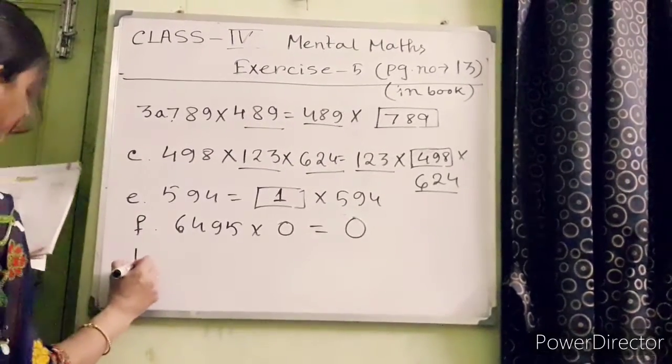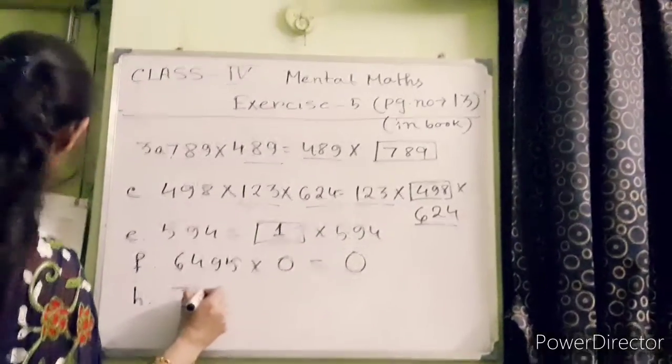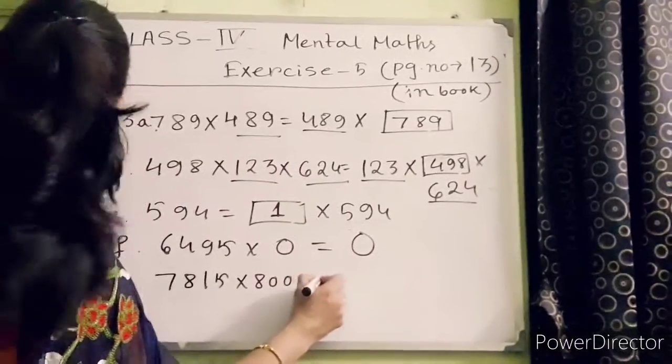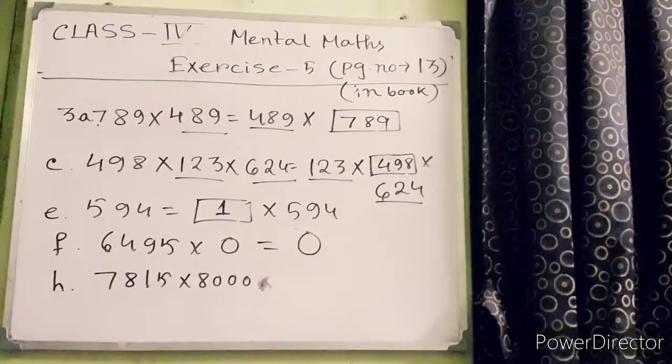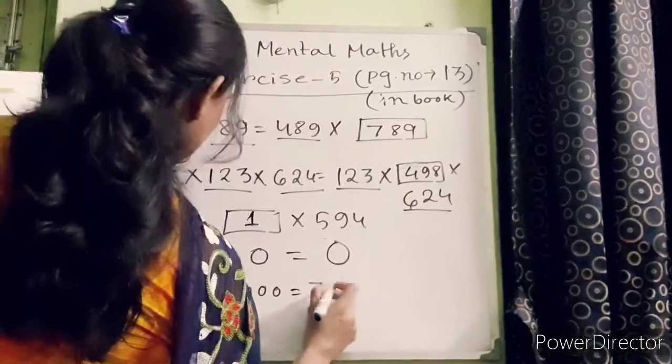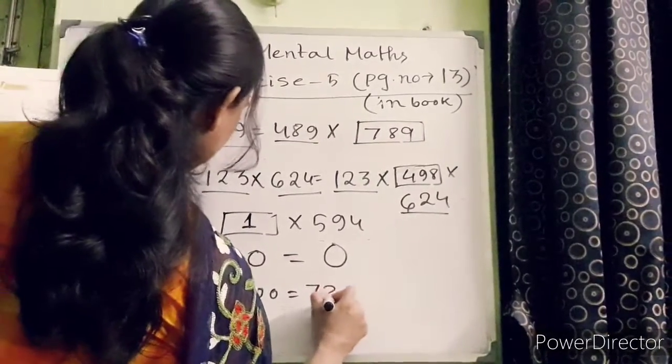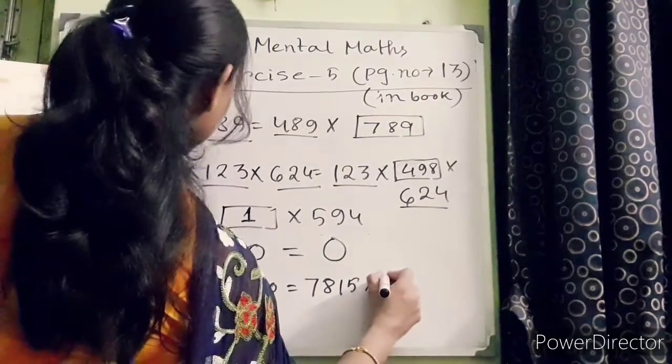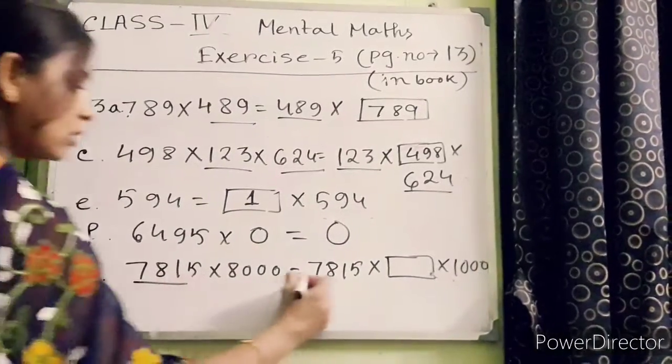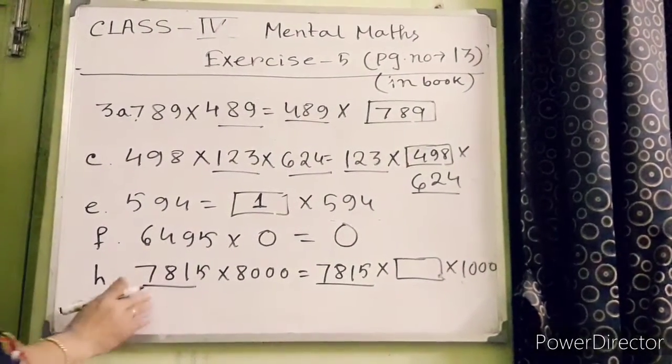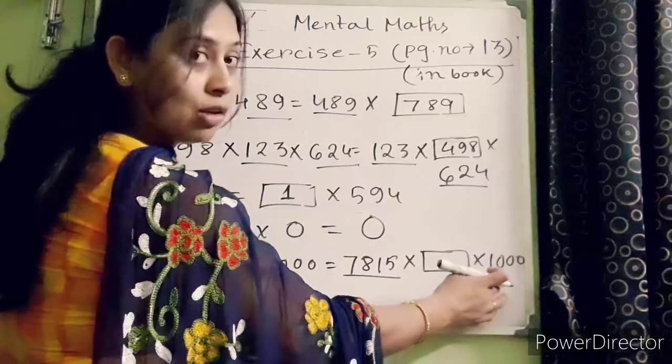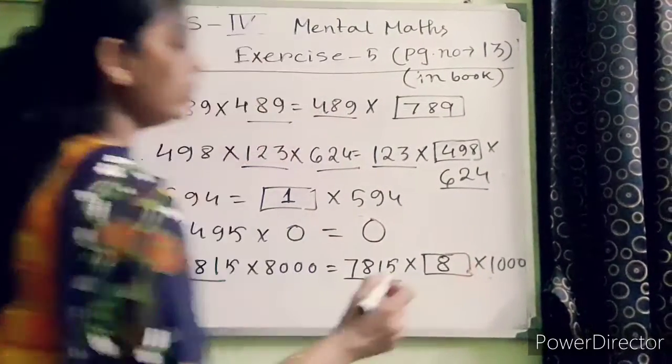7815 into blank equals 7815 into 1000. 8000 into blank equals 7815 into 1000. This number is present on both sides, there is 8000 and 1000, so you have to multiply 1000 with 8, so that's why you have to put 8.